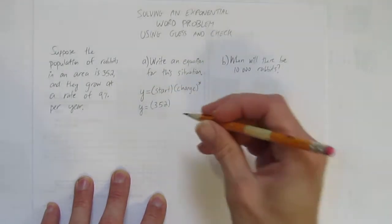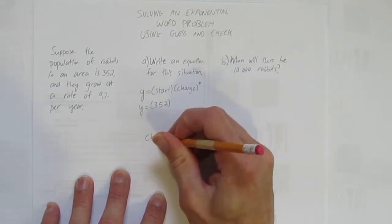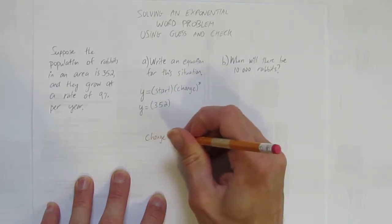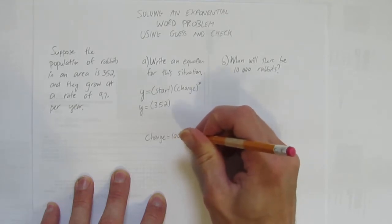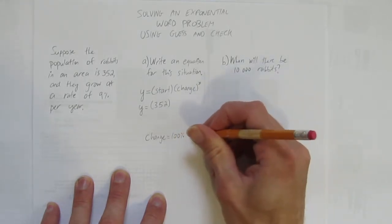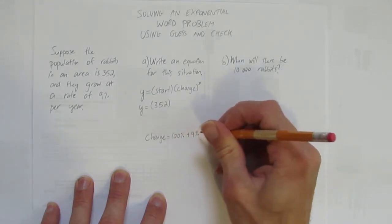But I'm going to have to figure out what the change is. Down here, I'll maybe show my work. The change is 100% of the rabbits plus 9%.